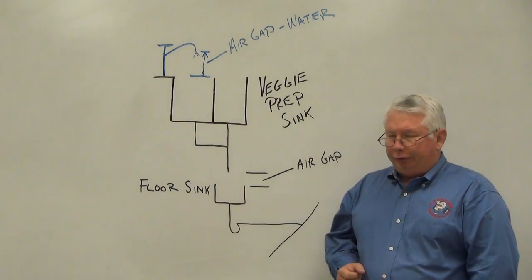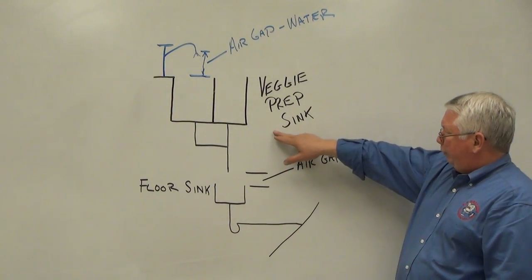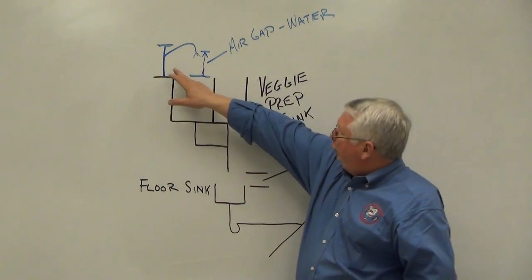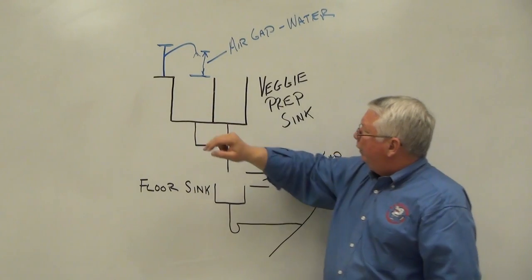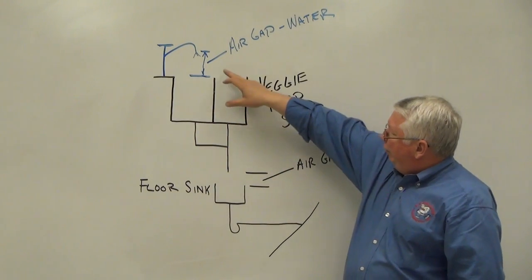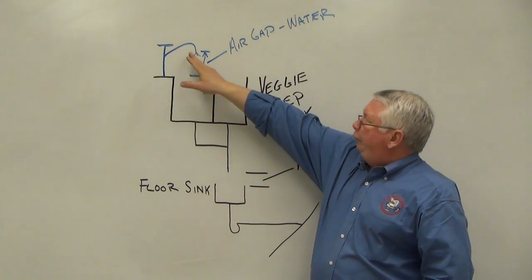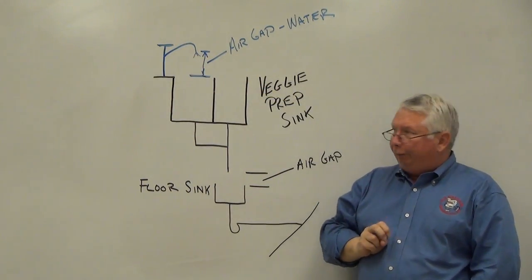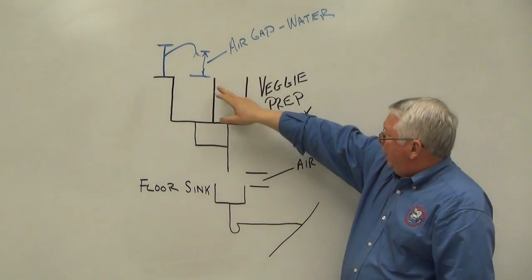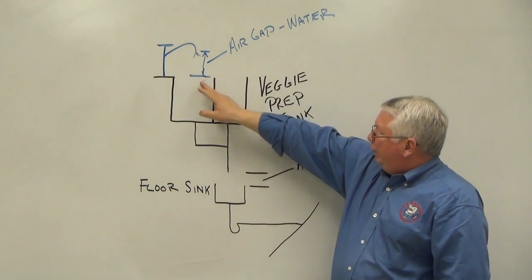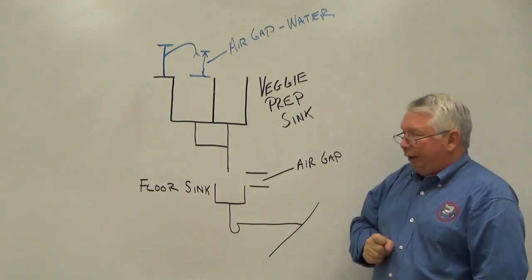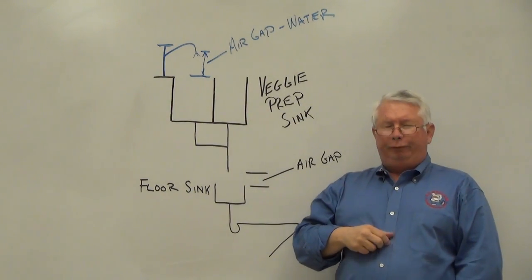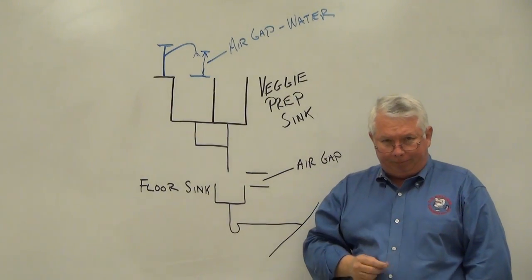In this example we have our vegetable prep sink that's being served by a faucet. The vertical distance through free atmosphere between the discharge opening of the faucet and the flood level rim of the sink is the air gap for the water distribution system.